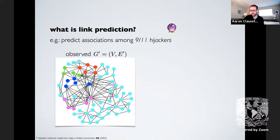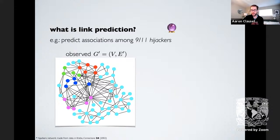Here is a simple example: social associations between the 9/11 hijackers along with their known associates. These edges were extracted from media reports, from a paper by Valdis Krebs. The cyan nodes are the associates, and the red, green, blue, and magenta nodes are the actual hijackers on the different planes. This network is clearly not the full interaction network since these are all public reports of associations.